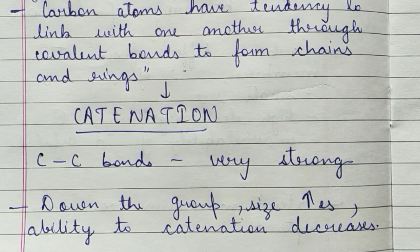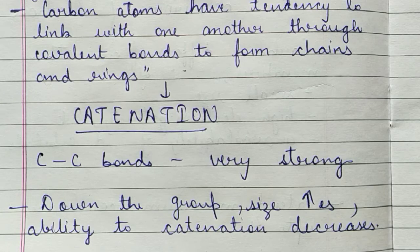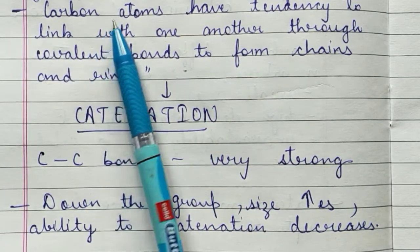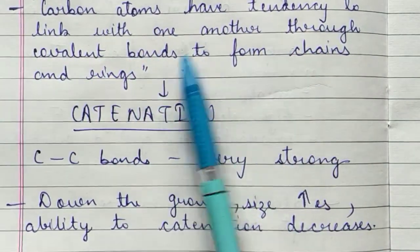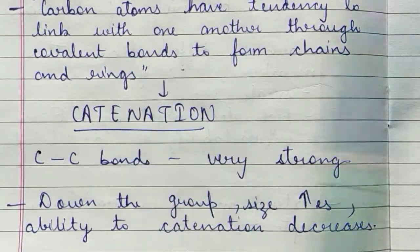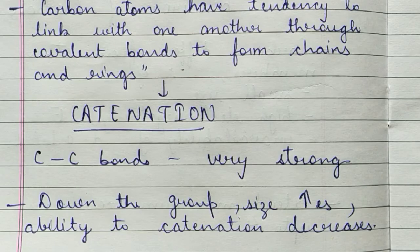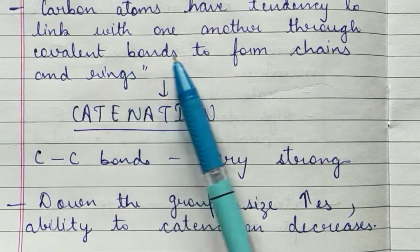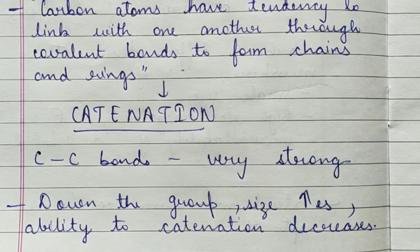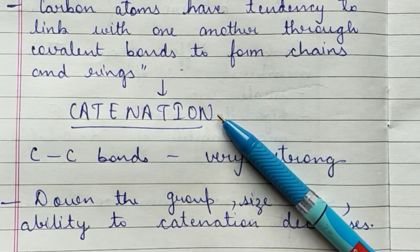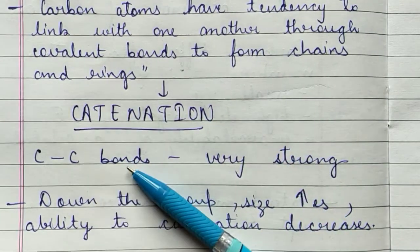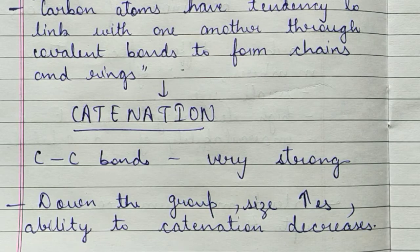Next is the catenation property, which is very important — you may have studied it in Class 10 as well. Catenation is also called the self-linking property. Carbon atoms have the tendency to link with one another through covalent bonds to form long chains and rings. This property is known as the catenation property. Carbon-carbon bonds are very strong because of their small size and effective orbital overlap.